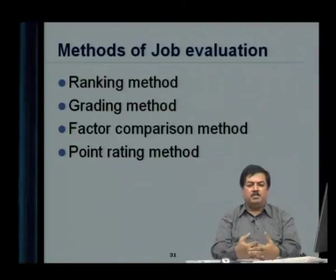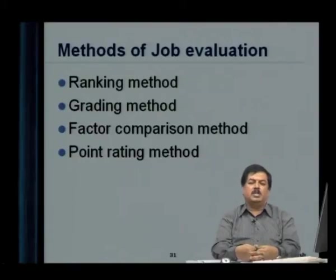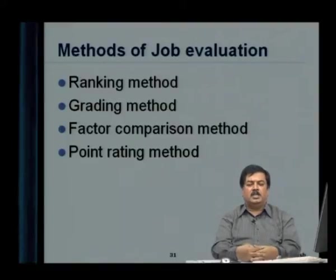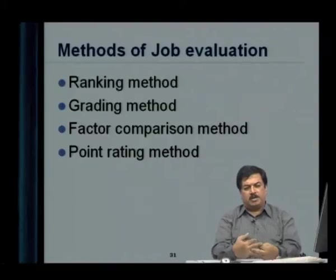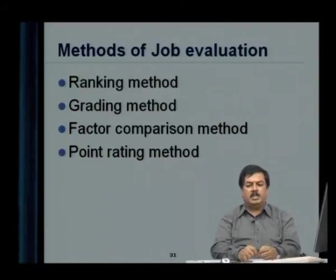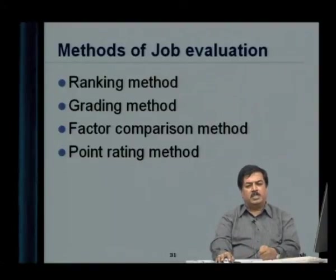The point rating method is an improvement of the factor comparison method. In factor comparison, the same weightage is given to all considered factors, but in the point rating method, different weights can be assigned to different factors. For example, education could be about 80 points, training 40 points, giving 120 points assigned to education and training together. For different factors, different weights are identified, and jobs are compared. A minimum and maximum is defined for particular point ratings, which becomes the basis for defining salary scales and a point for negotiation.